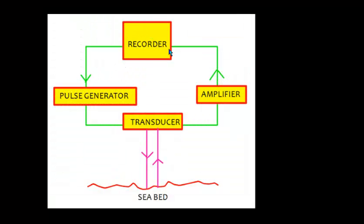To summarize the working: the pulse generator generates the pulse, which passes through the transducer. The transducer converts electrical energy into acoustic energy, which travels down and strikes the seabed. An internal clock starts, and after striking, the echo comes back. The acoustic energy is converted back to electrical energy, passes through an amplifier to increase the strength, and is then recorded on the display unit.